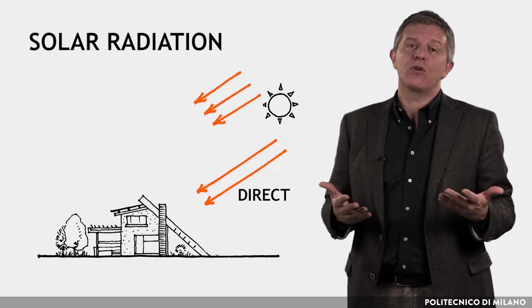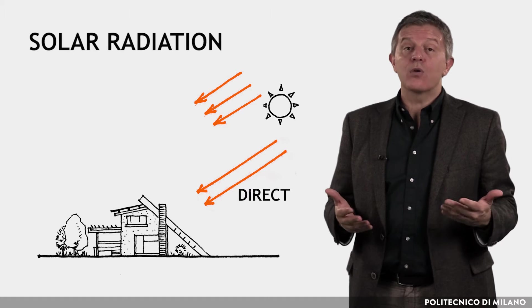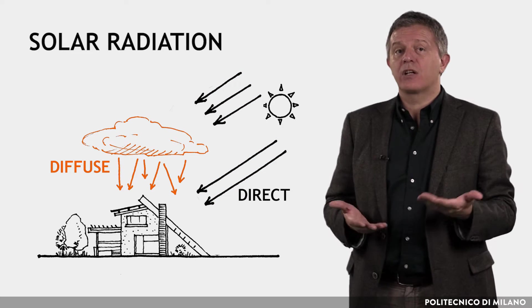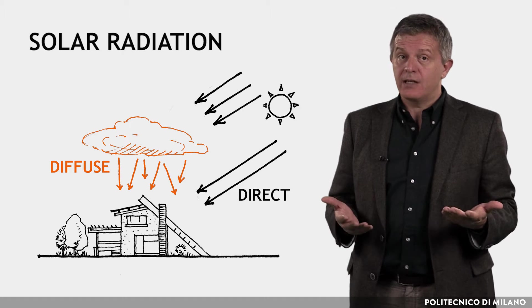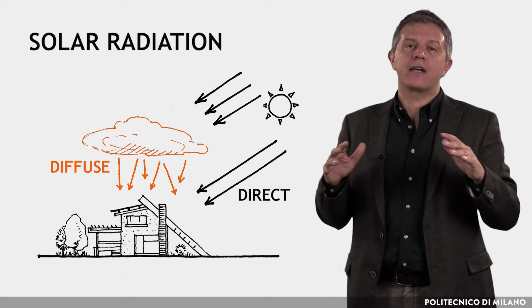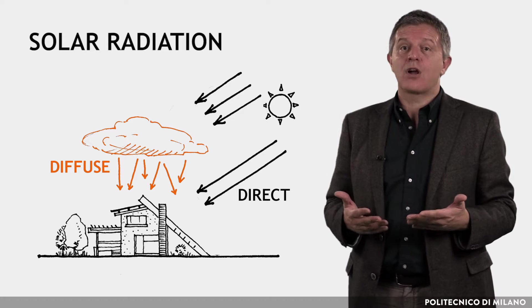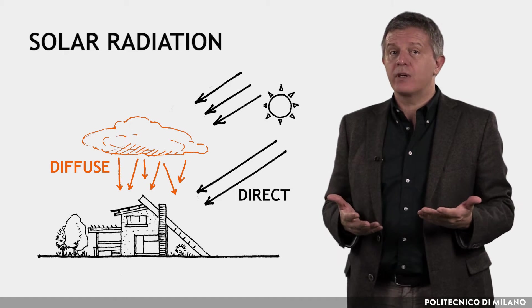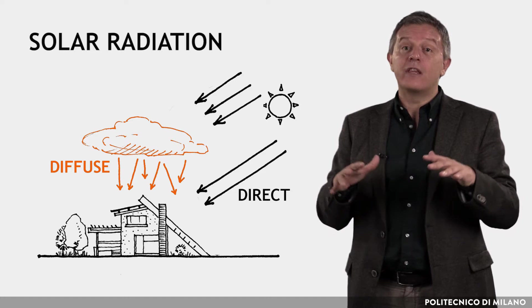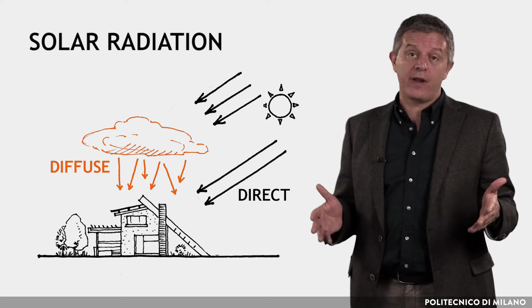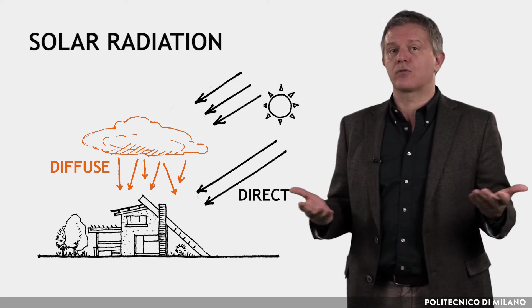Also, diffuse radiation depends on the spatial disposition of the surface, and more precisely, on how it sees the sky dome. Since we can assume that the diffuse component comes from all directions of atmosphere, the greater the portion of the sky viewed from the surface, the greater the collected diffuse radiation.